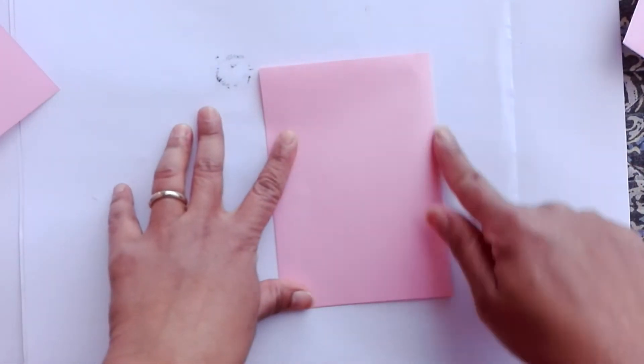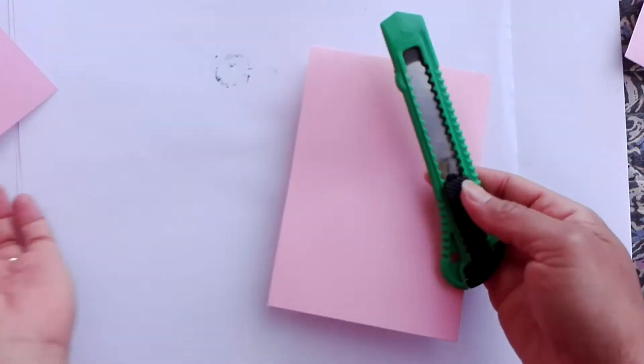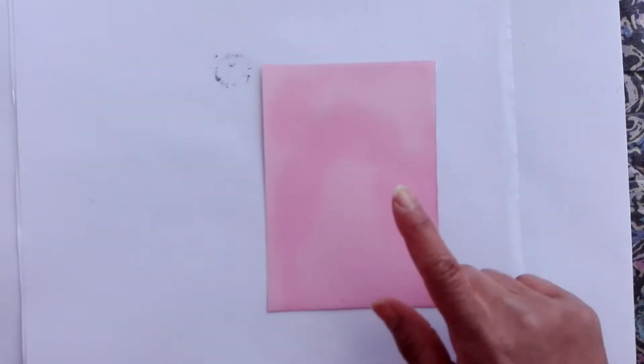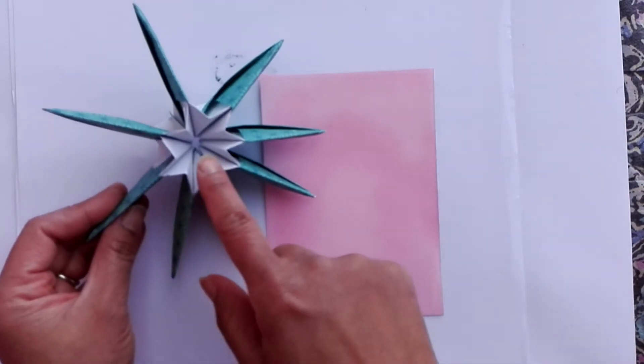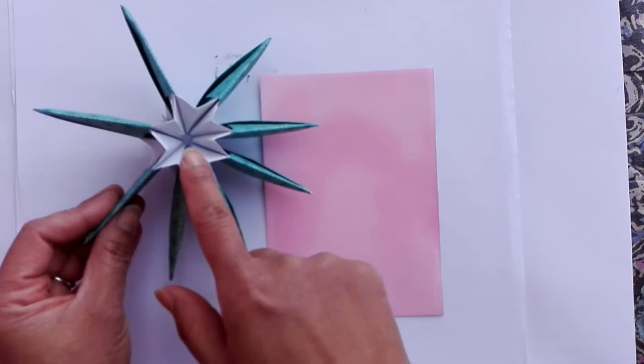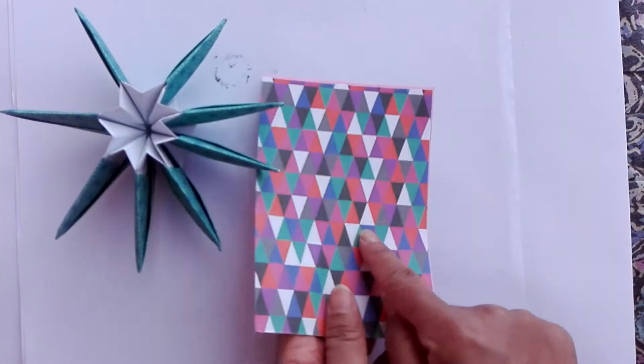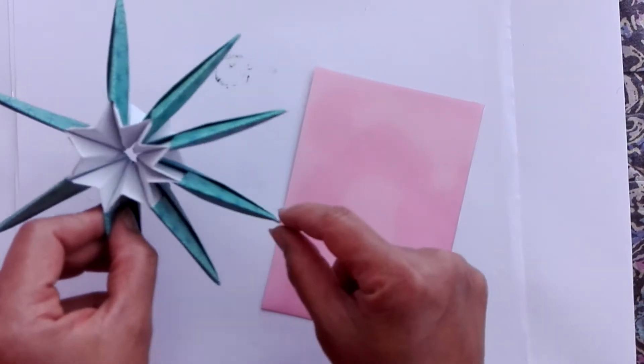We want to cut it so we'll get this size. The color on the upside will be the color of the little star inside, and the color on the downside will be the color of the rays.